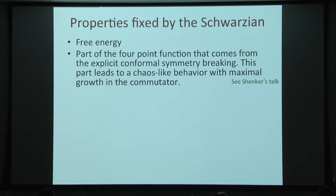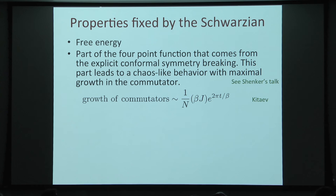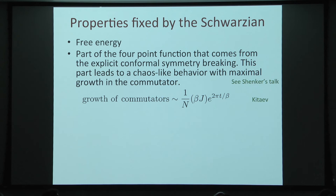The relationship between chaos and the out-of-time-order four-point function was discussed in detail in Steve Shenker's talk. One can compute it in particular in this model. When you do the calculation, you find that the growth of the commutators, or the out-of-time-order correlation function, has a term growing with an exponent that saturates the chaos bound — it grows as fast as it could according to that bound. The fact that this comes from the explicit conformal breaking is related to the explicit power of J in front — this part of the four-point function is not conformally invariant only because of this prefactor, and can be obtained directly from the Schwarzian action.